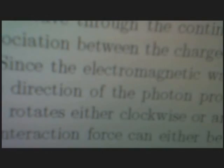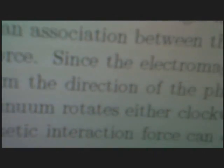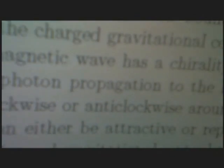Since the electromagnetic wave has a sheer reality, which means that the wave vector — pointing from the direction of the photon propagation to the location of the disturbance in the space-time continuum — rotates either clockwise or anti-clockwise around that direction of propagation, the electromagnetic interaction force can either be attractive or repulsive.